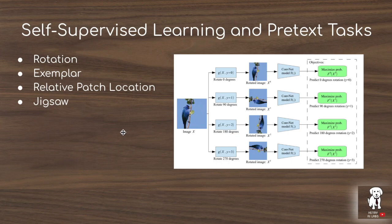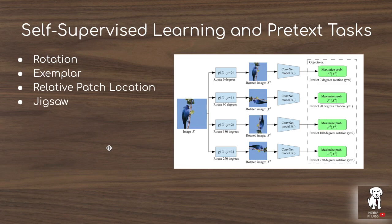In computer vision, self-supervised learning is used in many different ways. Some of the most common are rotation prediction, where you take an original image, rotate it, and predict the rotation angle — 90 degrees, 180 degrees, and 270 degrees. There's also the exemplar task, relative patch location, jigsaw, and more recently a lot of advancements in contrastive self-supervised learning, where the pretext task is to have similar scores for positive pairs and dissimilar scores for negative pairs.